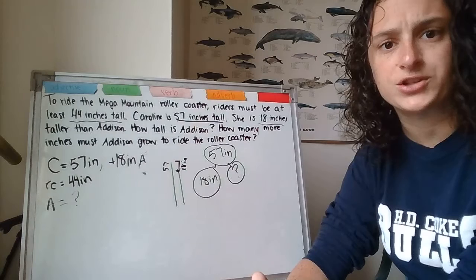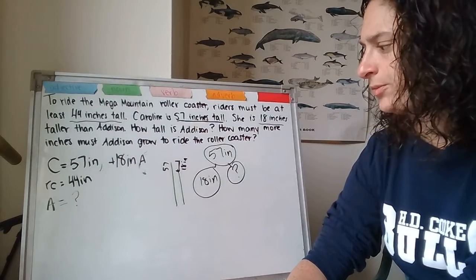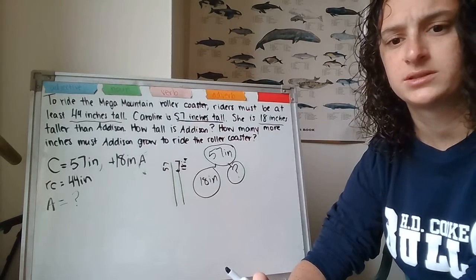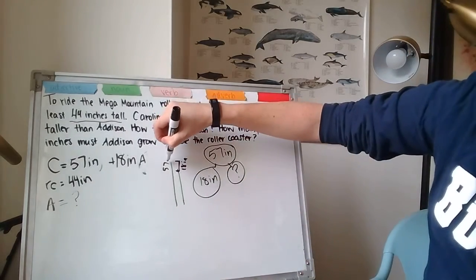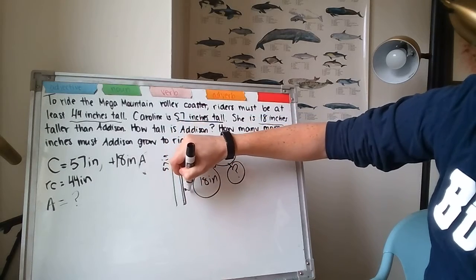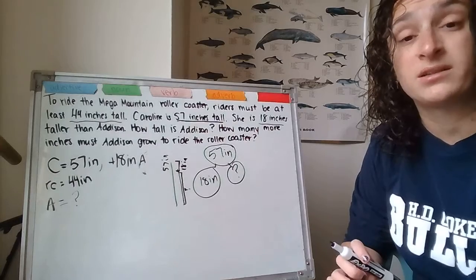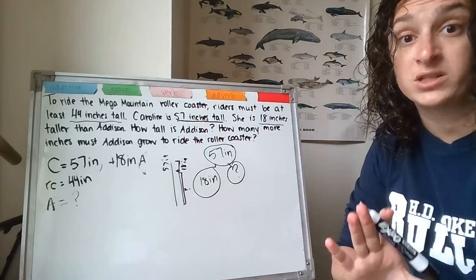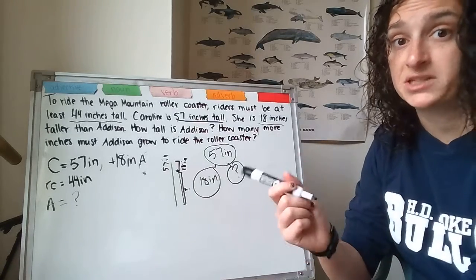Go ahead and write down an equation and start to solve it. What equation are we going to use if we're looking for a part? What operation do we want to use? All right. If you're not done writing down the equation, pause here. When you're done, you can hit play again and keep going with us. If you're done, let's keep going.